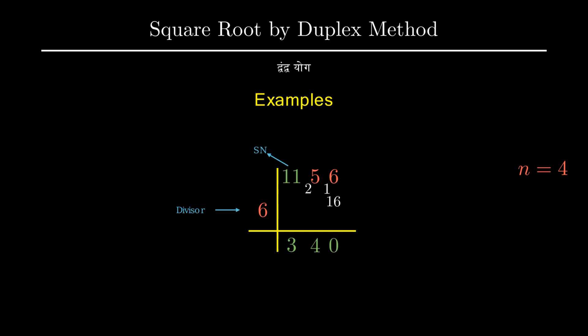So 0 is the last digit of our final answer. Since we had a number with even number of digits we will place a decimal after n by 2 digits from the left hand side. So 34 comes out to be the square root of 1156.